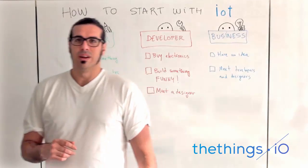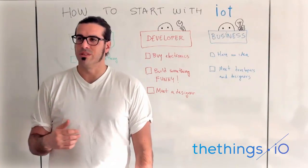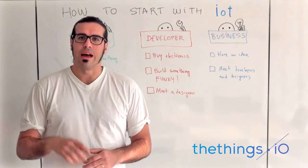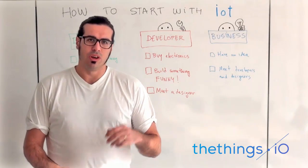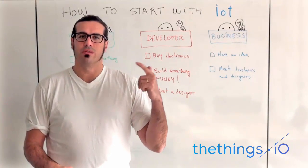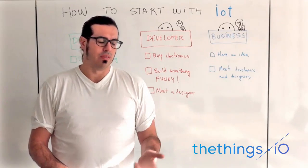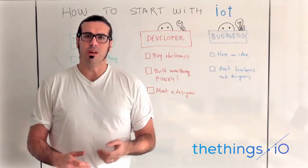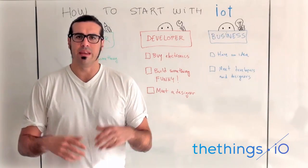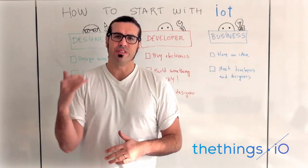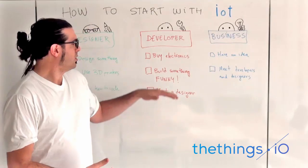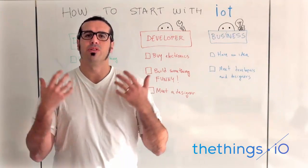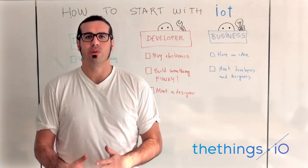If you're a developer and you are tired of being a consultant, I suggest you to buy electronics and start hacking them. You can buy Arduinos, Electric Imps, Raspberry Pis, Intel Edisons — these are very cheap electronics with a lot of things to build on top, with a lot of sensors and actuators to connect, and that will give you an idea of what the Internet of Things is and what it means to connect a sensor and an actuator to the Internet.